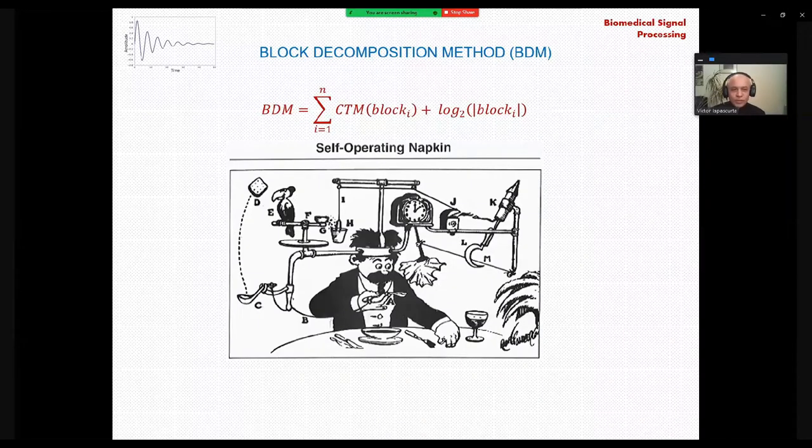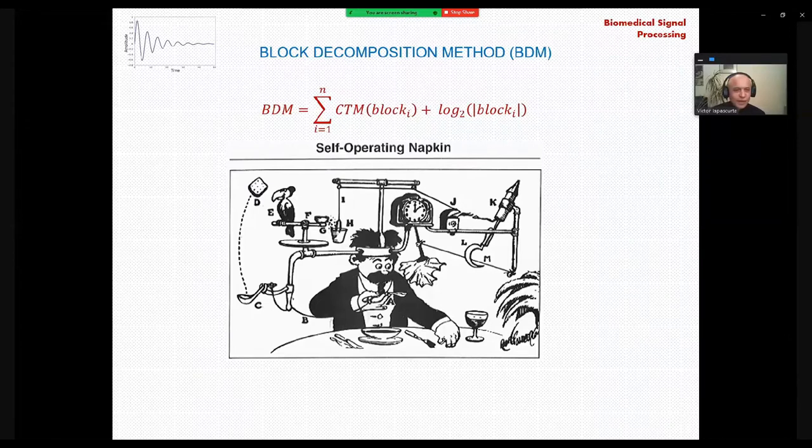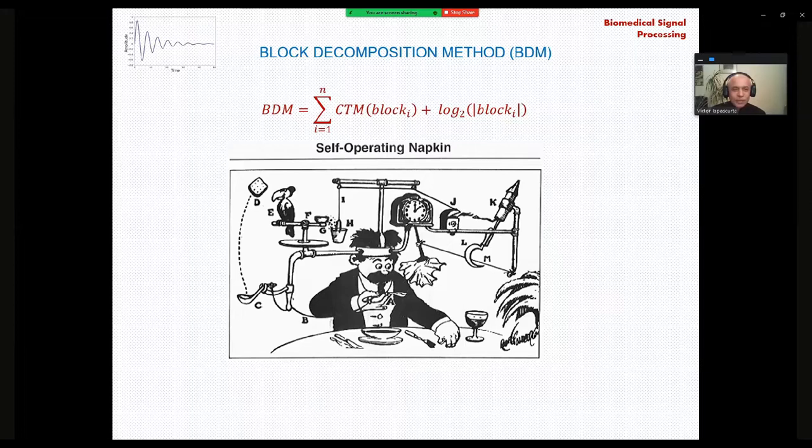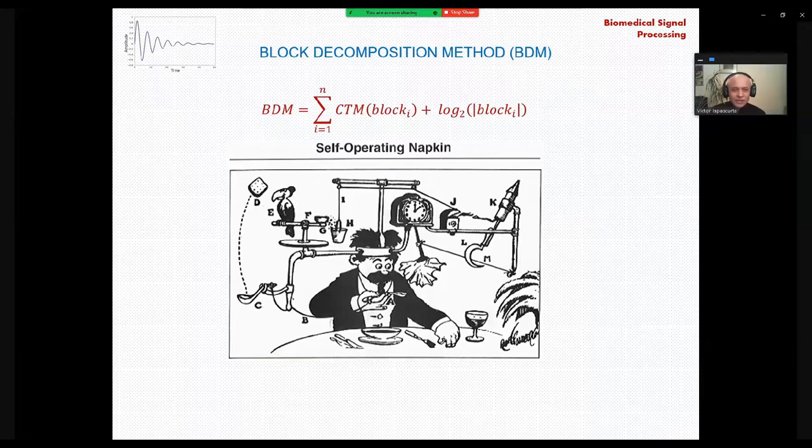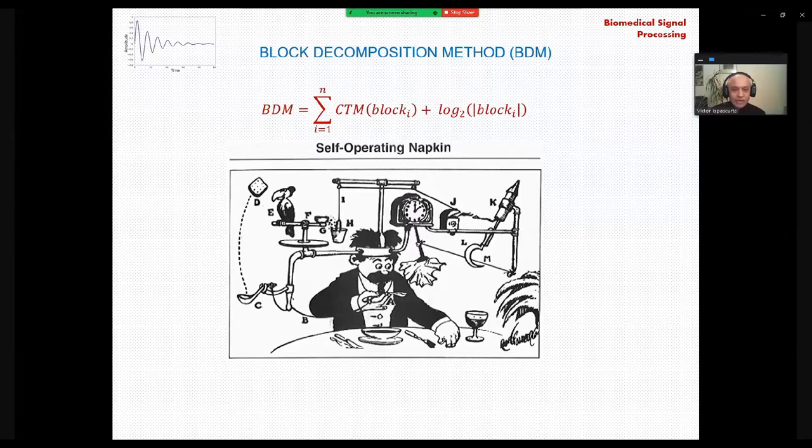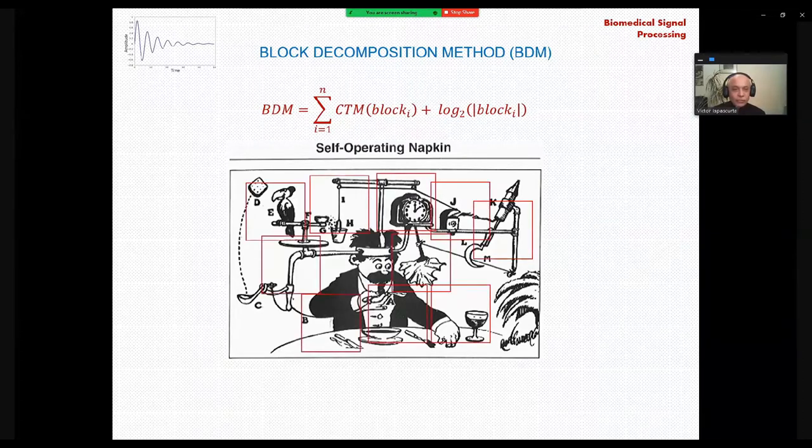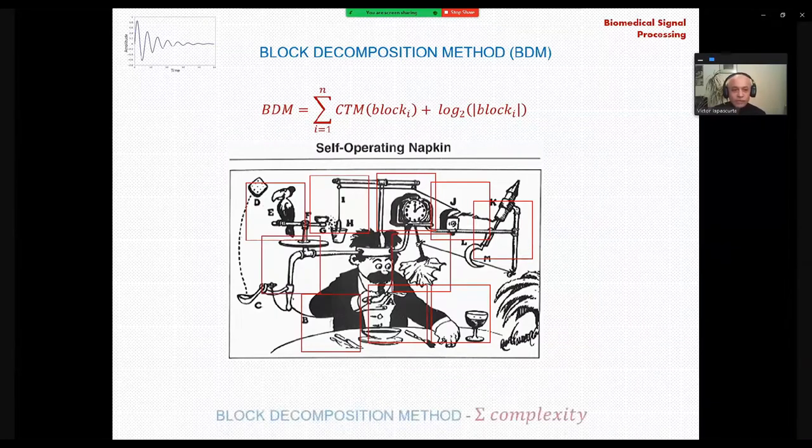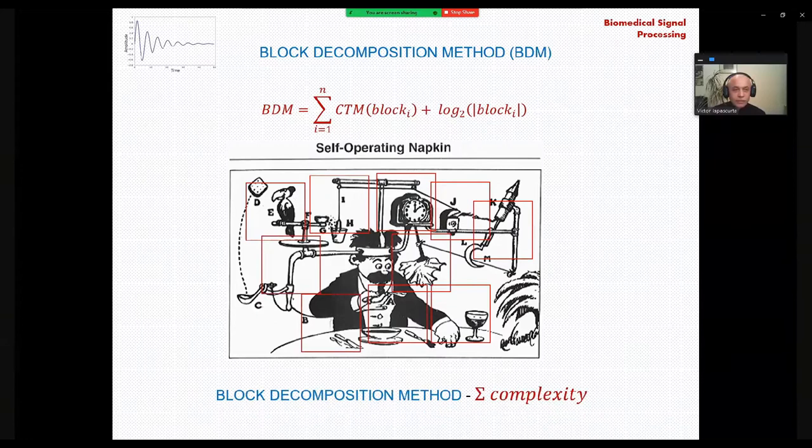Just to illustrate, using a jockey image, self-operating napkin, which in fact is a quite sophisticated machinery, but useless machinery, in fact, we can divide all this machinery into smaller blocks, calculating the complexity of these separate blocks, and finally summing the results, and we will get the overall complexity of the whole block.